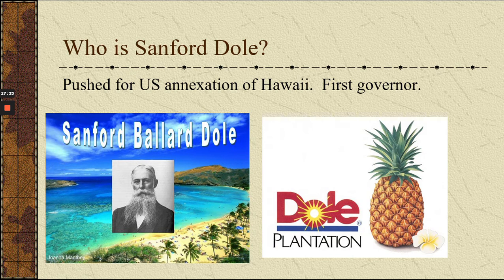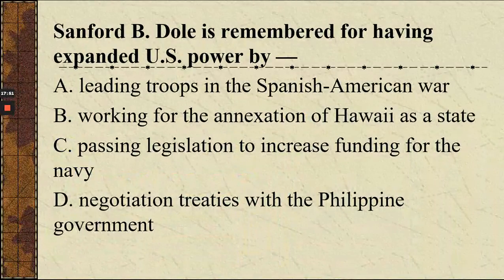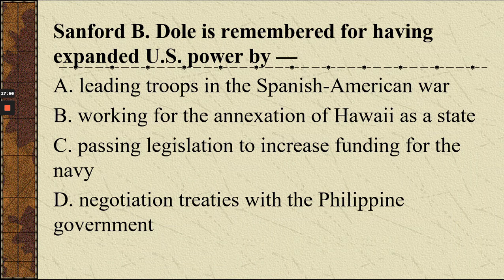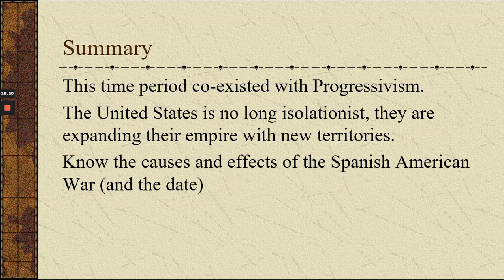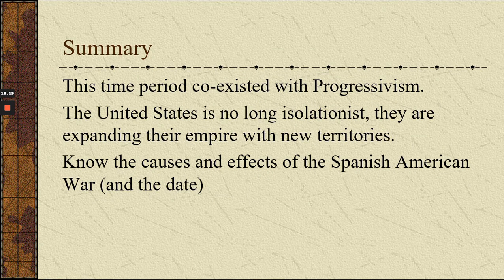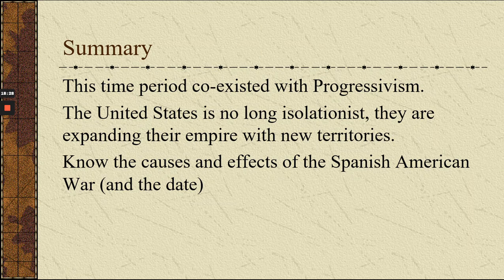Sanford Dole helped the United States steal Hawaii. Hawaii was an independent nation with a queen, and this guy wanted to make money selling pineapples, so he convinced the United States to annex Hawaii. Summary of this era: it coexisted with progressivism. The United States is no longer isolationist — they are expanding their empire with new territories. Know the causes and effects of the Spanish-American War and the date: 1898. Territories gained: Puerto Rico, Guam, and the Philippines. Economic effect: more sugar production.